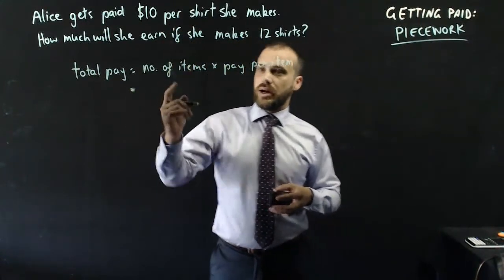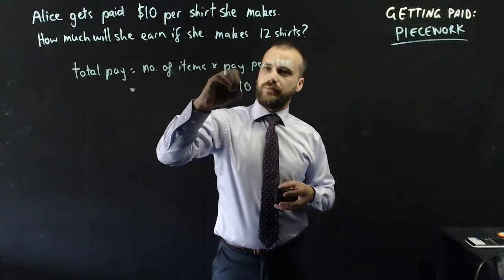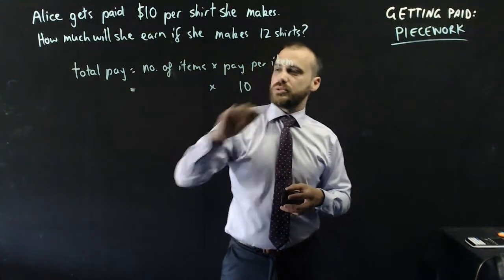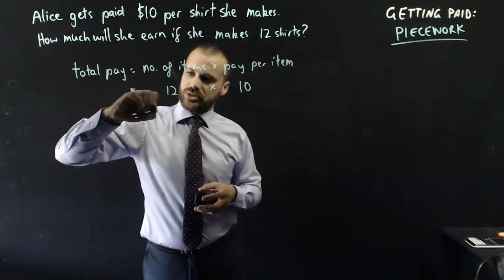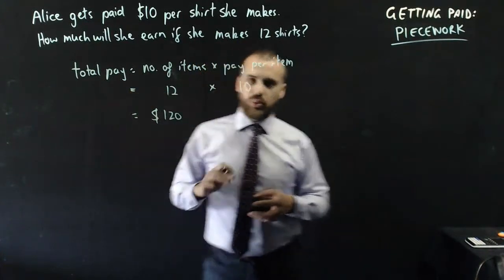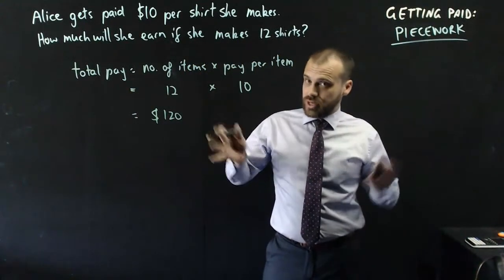Total pay equals number of items times pay per item. Now in this case, $10 per shirt, and the number of items was 12, that's $120. And that's piecework in a nutshell.